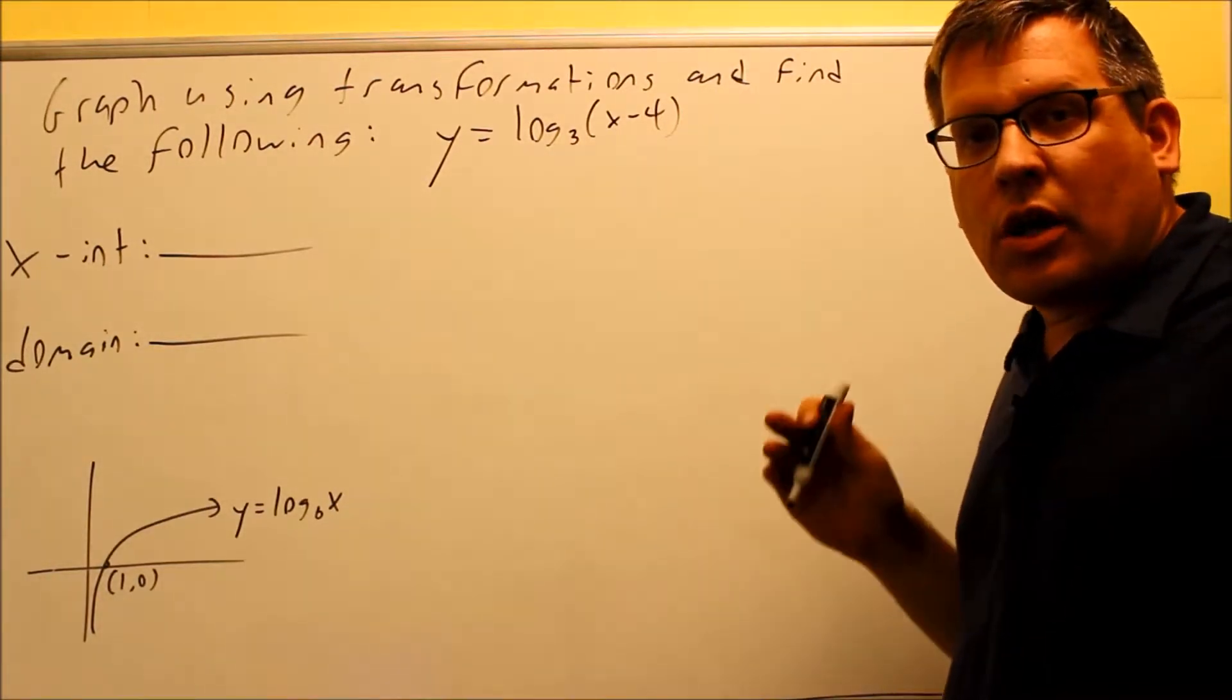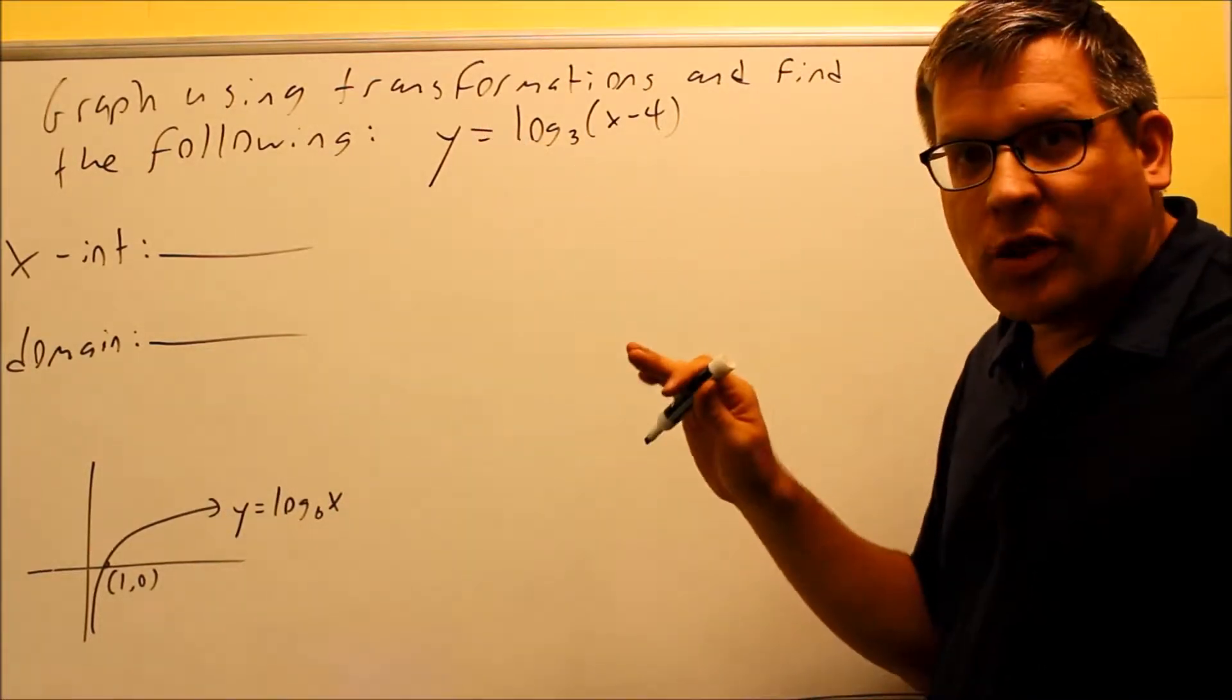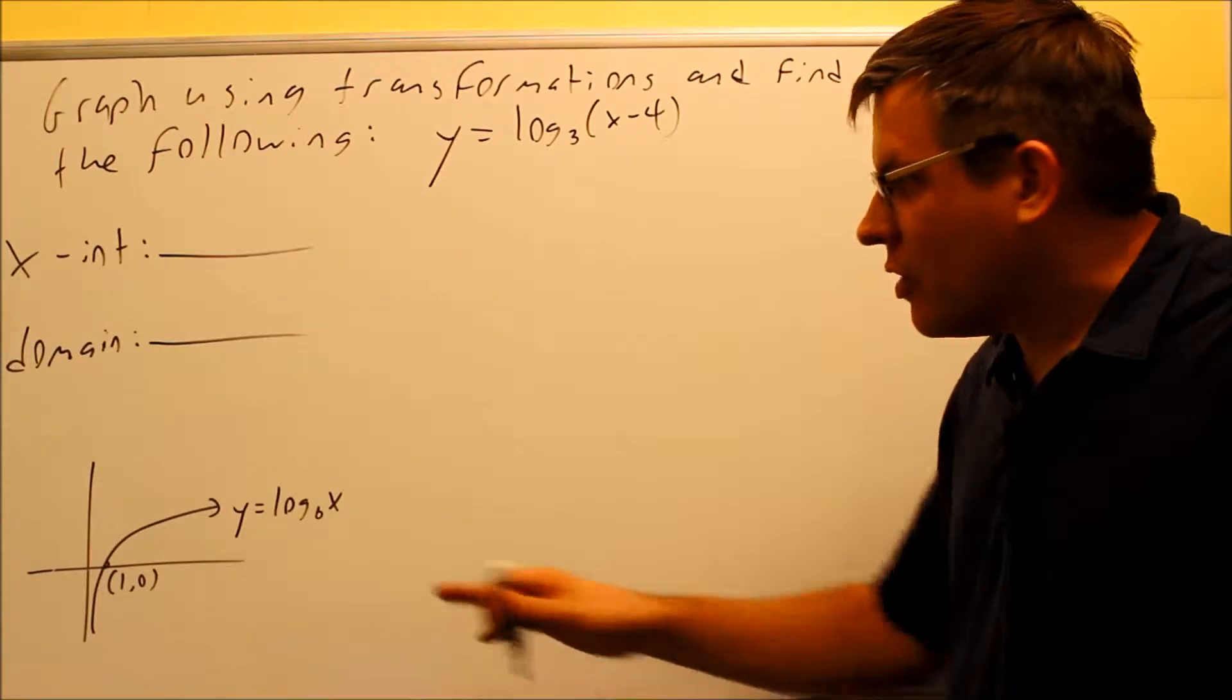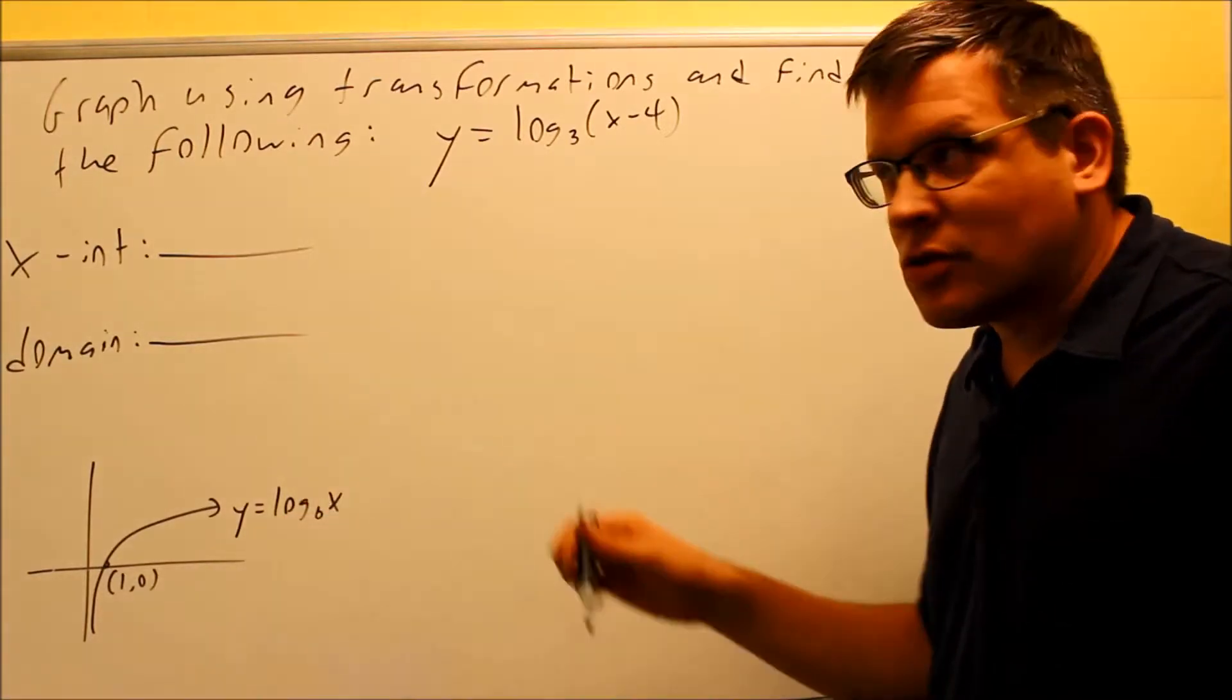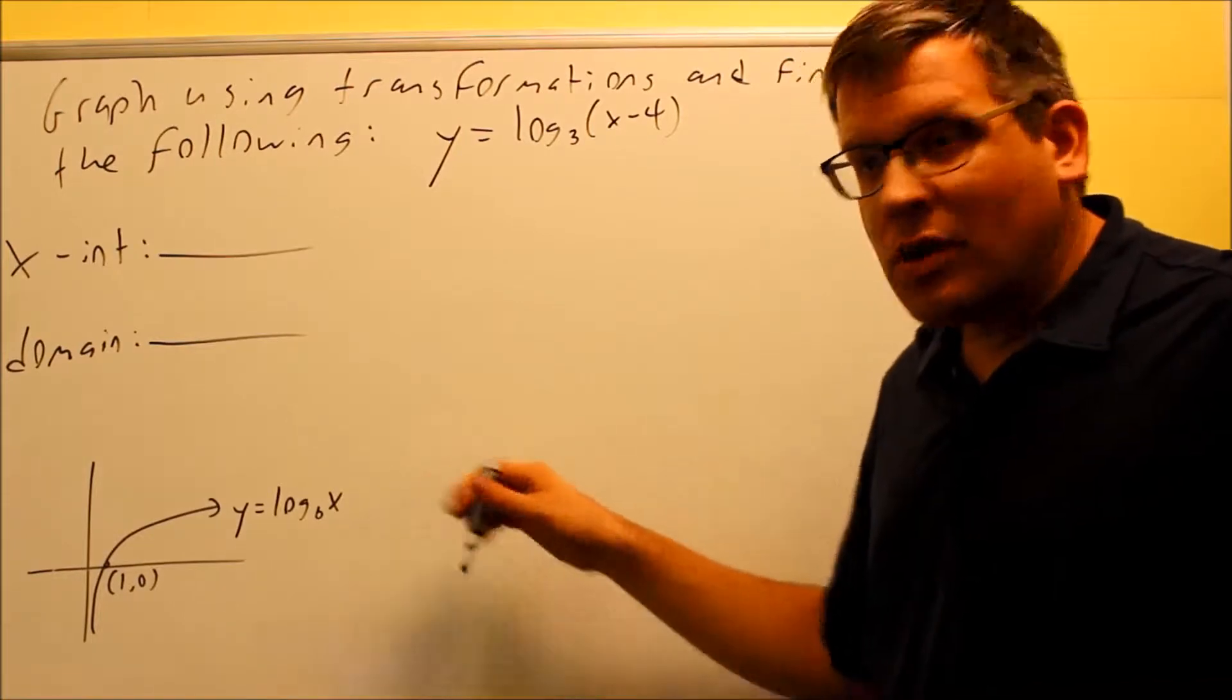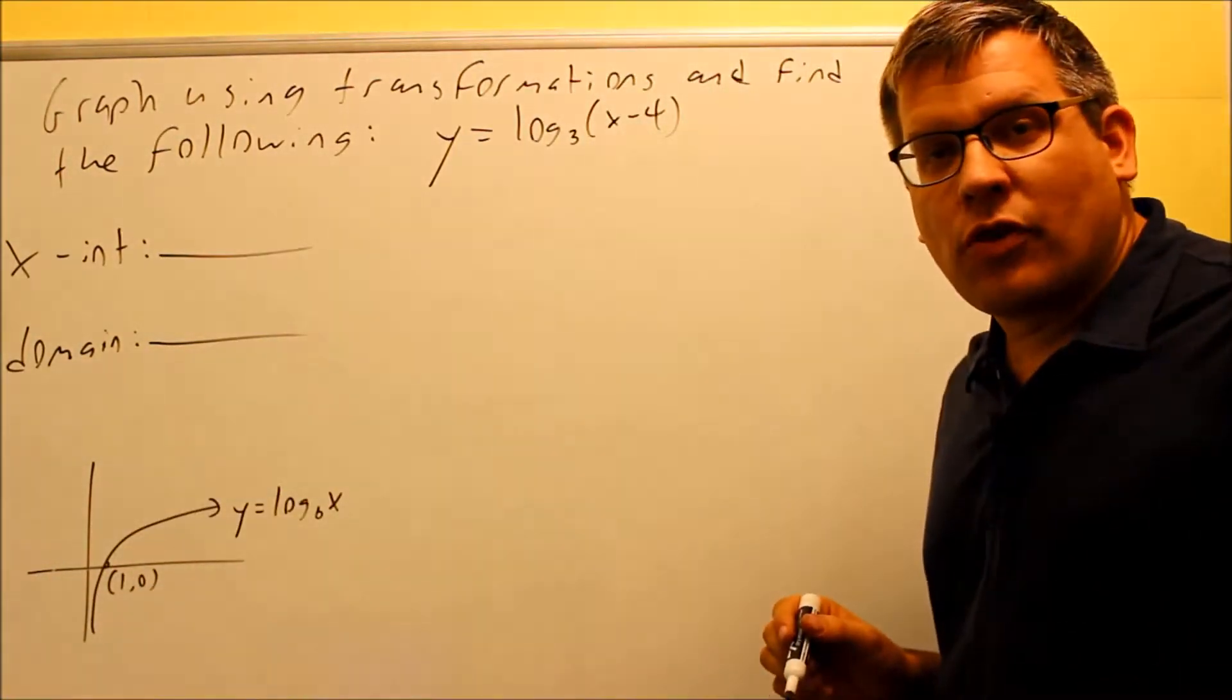Now, in a previous video, I talked about where the base graph comes from. So, since we're using transformations, we need to know first what our base graph is, and that's this one down here, y equals log base b of x. That originally came from the inverse, it was the inverse of the exponential function.